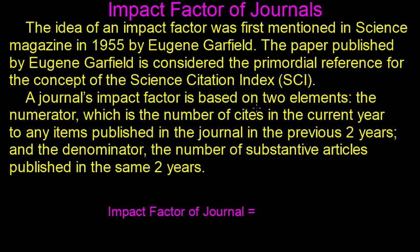The journal's impact factor is based on two elements. The numerator, which we will consider as B, is the number of citations in the current year to any articles published in the journal in the previous two years. The denominator, which we will write as C, is the number of substantive articles published in those same two years.